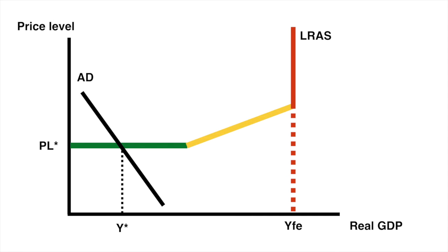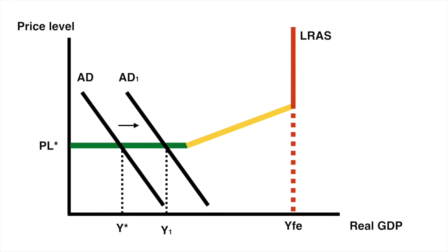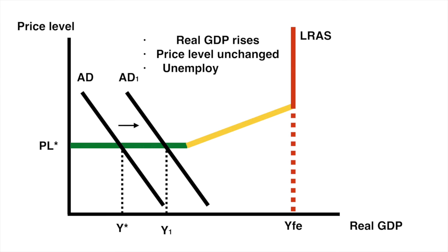If aggregate demand is along the horizontal portion of the LRAS, real GDP is very low and unemployment is very high. There are significant levels of spare capacity in this economy and it's likely that there is a deep depression or recession. In this instance, increasing aggregate demand from AD to AD1 is going to increase real GDP from Y star to Y1 and keep the price level unchanged. As more output is being produced, more people are employed, thereby reducing unemployment.